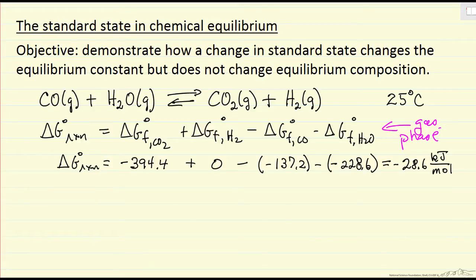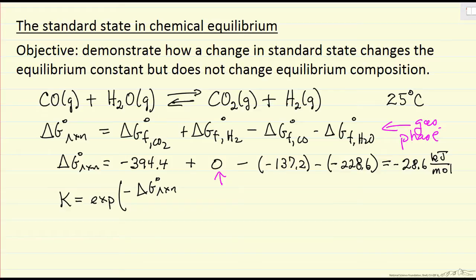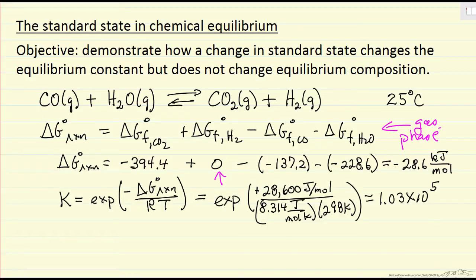A couple things to notice: for an element, delta G of formation is zero. I've calculated delta G of reaction as negative 28.6 kilojoules per mole. So now I have delta G, and I should be able to get the equilibrium constant at 25°C. It's going to be the exponential of minus delta G of reaction at standard conditions divided by the gas constant and the absolute temperature. I've put the delta G value in joules rather than kilojoules — so 28,600 — and used appropriate units.